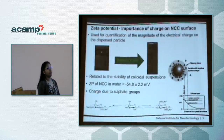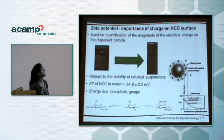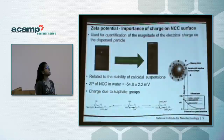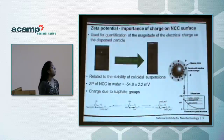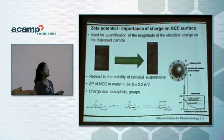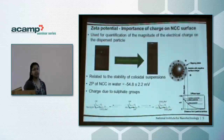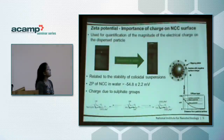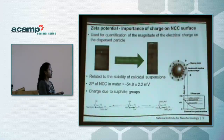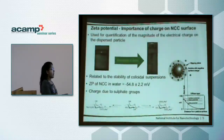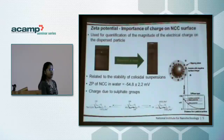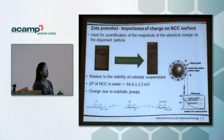I'll now talk about the importance of charge on the surface of NCC. We use the technical term zeta potential to quantify the magnitude of the electrokinetic charge on a particle. This is how our NCC looks, and if we disperse it in water, we obtain a fairly clear and stable dispersion with no sedimentation for up to a month. For our NCC obtained from AITF, the zeta potential is about minus 55 millivolts, and the charge is mainly due to sulfate groups present from the hydrolysis process. This charge helps stabilize the colloid.